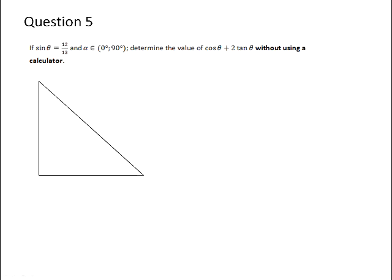Question 5, if sin θ is equal to 12 over 13 and θ is an element from 0 to 90 degrees, determine the value of cos θ plus 2 tan θ without using a calculator. So if we set up a right-angled triangle, we know that θ lies in a right-angled triangle because it's between 0 and 90 degrees. Sin gives us the ratio of opposite over hypotenuse. So the opposite side is 12 and the hypotenuse is 13.